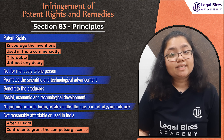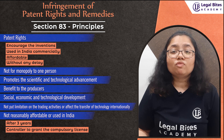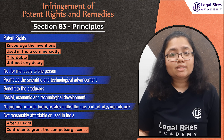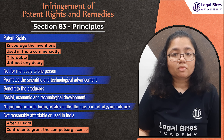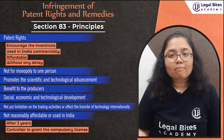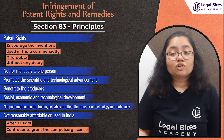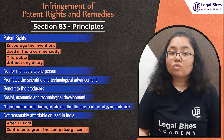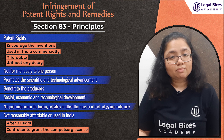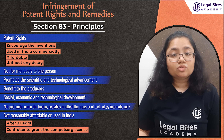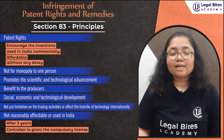The controller sees if the applicant is capable of doing such acts, the nature of the invention, the capital risk and working of the invention, and whether the applicant can bear the same. It is also considered whether the applicant approached the patent holder for a license and there was failure in that. The only exceptions are national emergency, extreme emergency, public non-commercial use, or anti-competitive practices, and all of this should be before the application date.